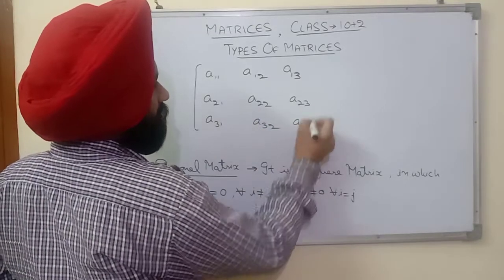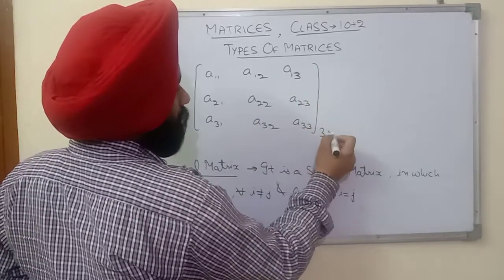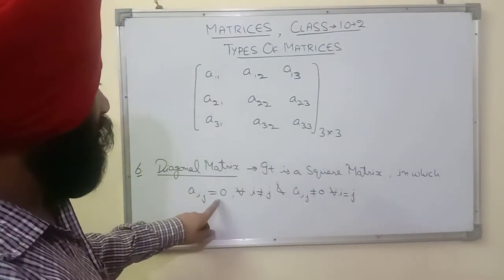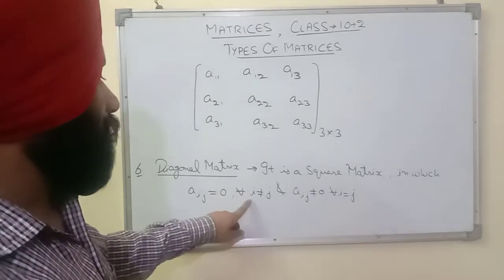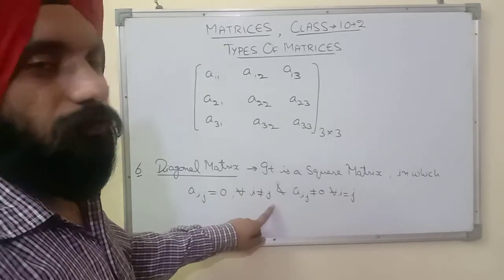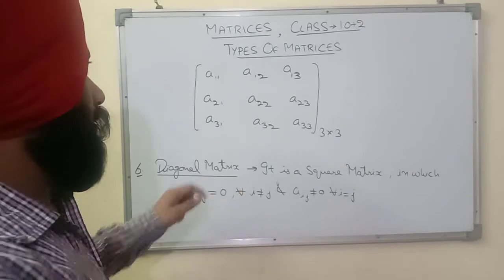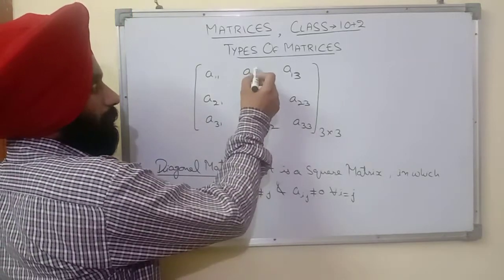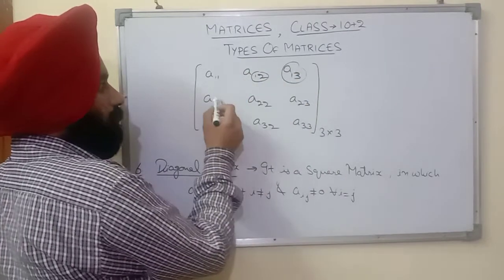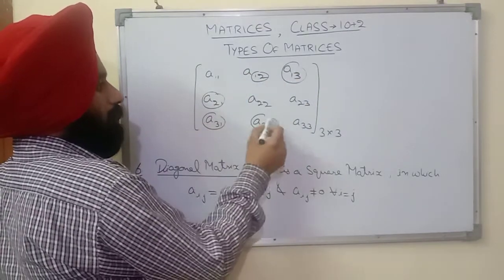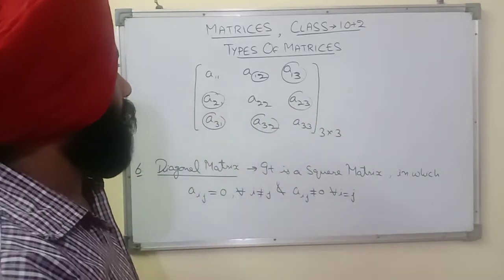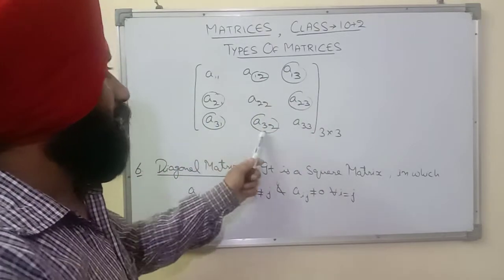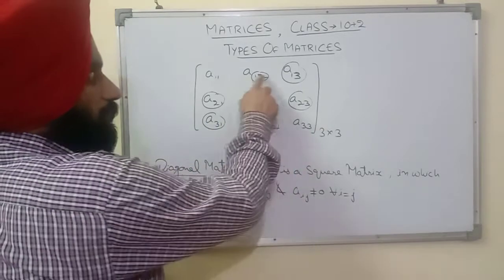Consider a 3×3 square matrix with elements A11, A22, A33 on the diagonal. For a diagonal matrix, where i is not equal to j — such as A12, A13, A23, A21, A31, A32 — these six elements will all be zero. These are the off-diagonal elements where i ≠ j.